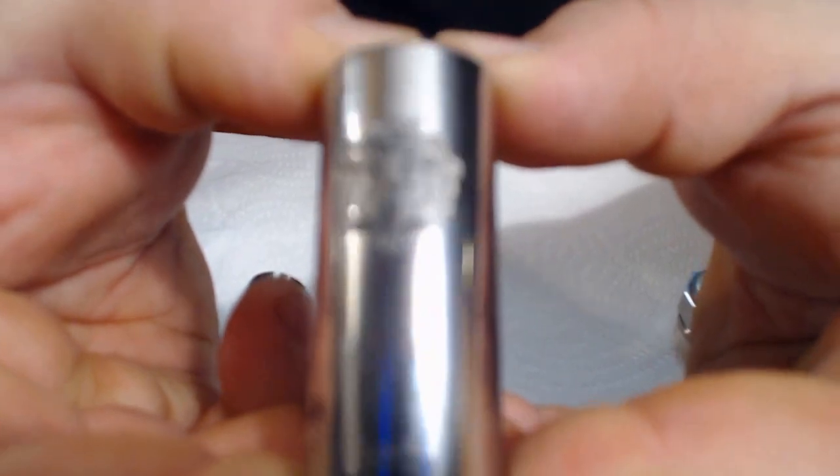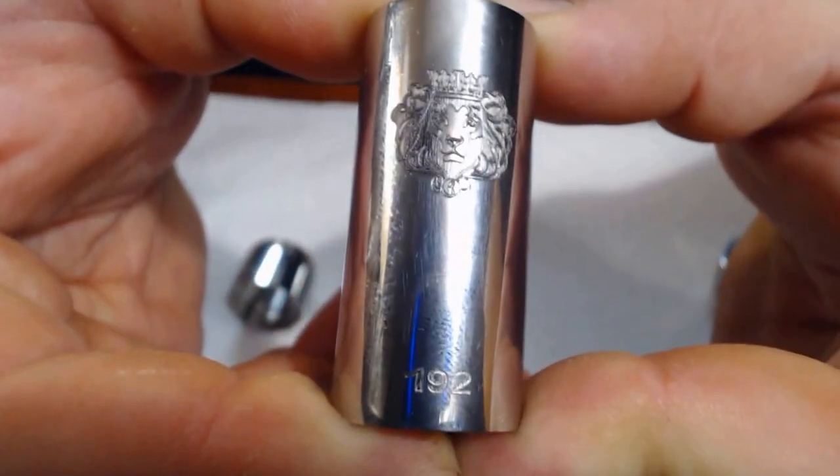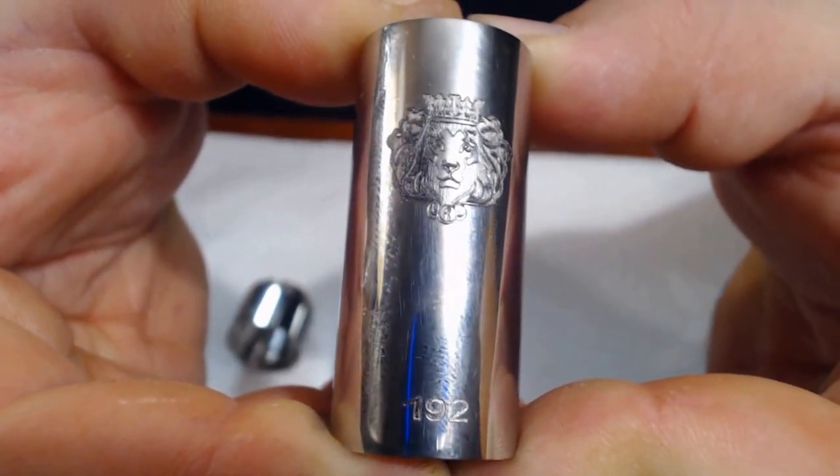Now we'll start with our main tubing. The tubing has a picture of the lion on it, it is laser engraved. Below that is the serial number.